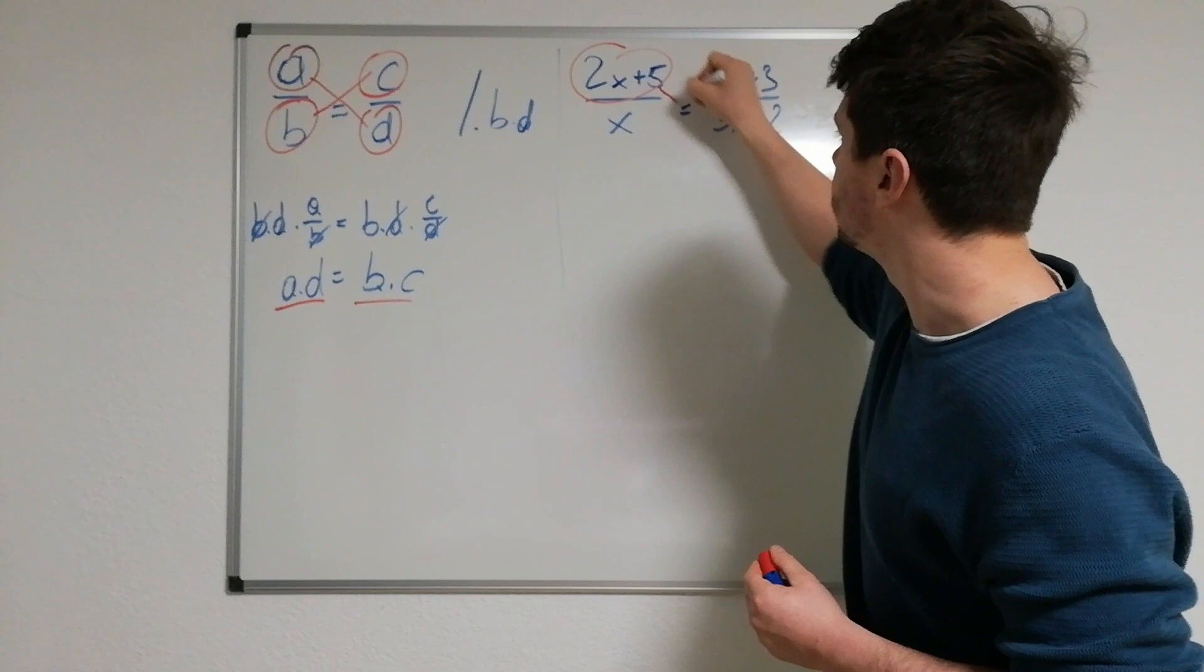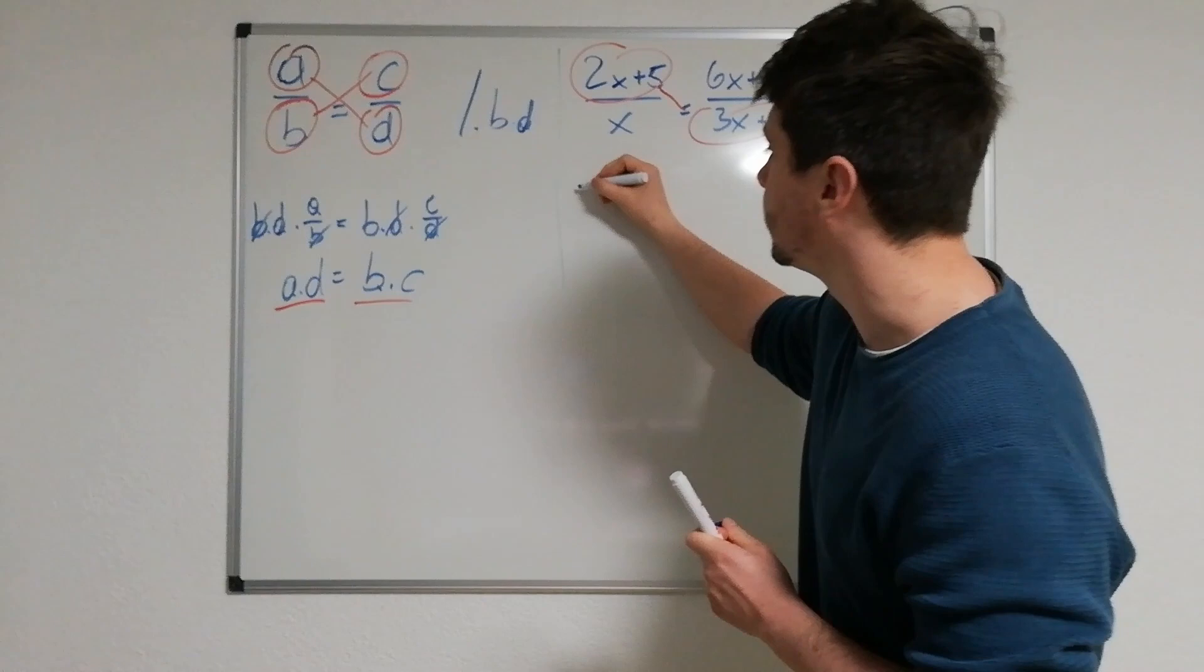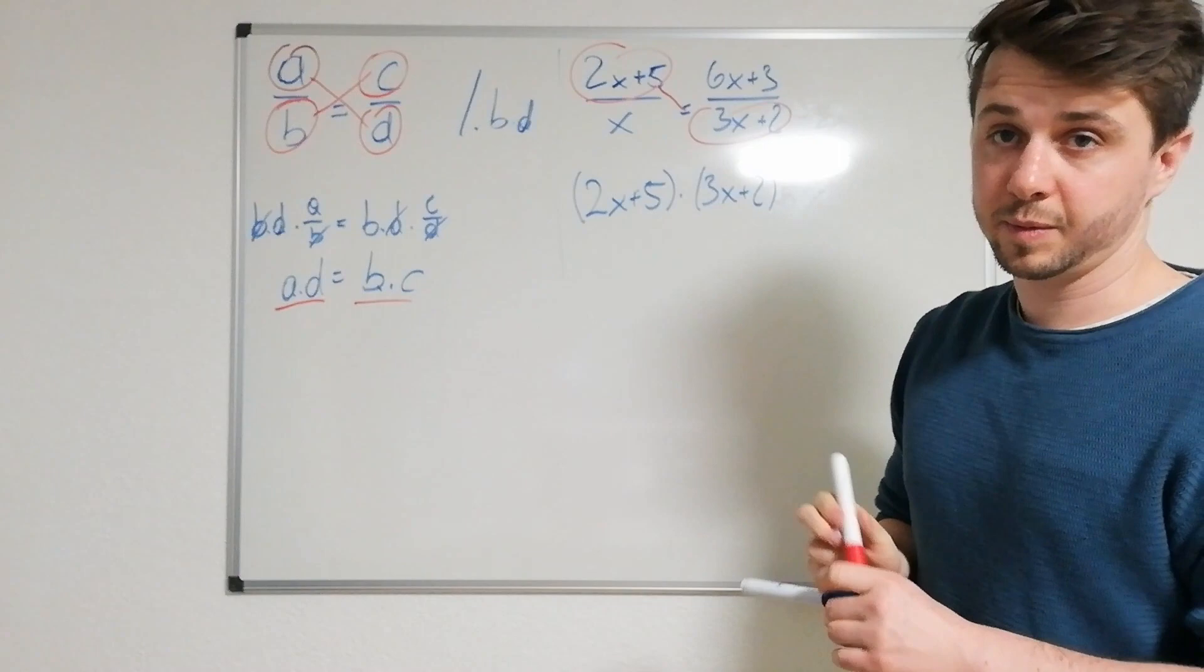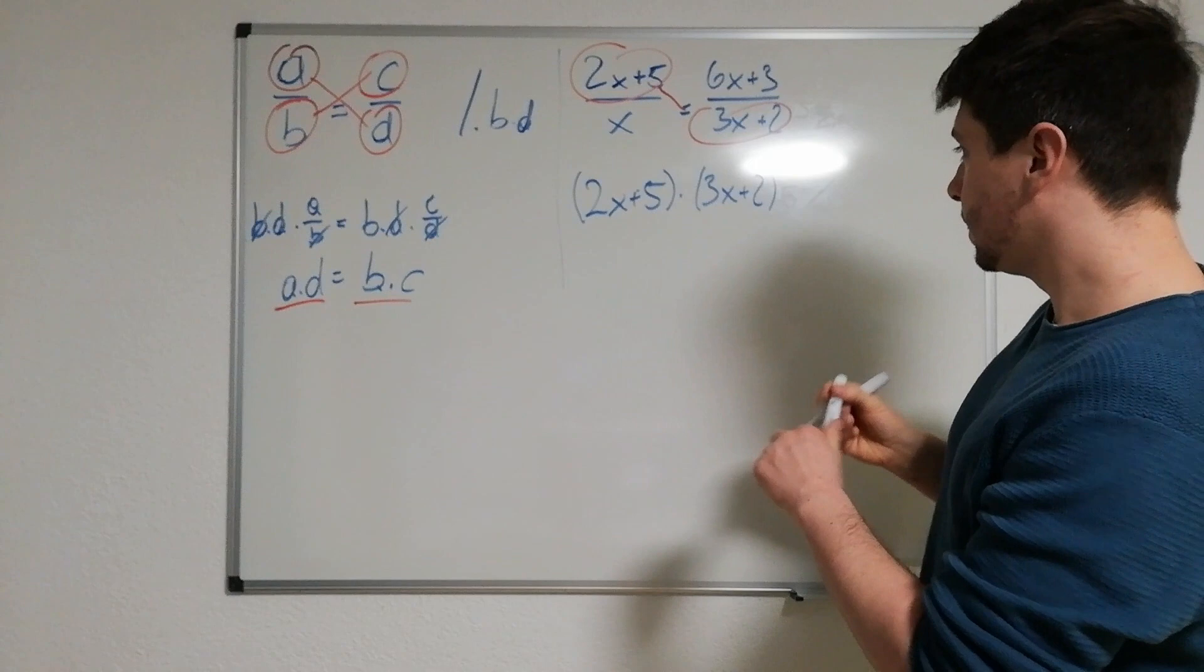These two, and you really have to remember that you put this into brackets: 2x plus 5 times 3x plus 2. Put those into brackets because otherwise you might get mistakes. And then you say it equals this over here.